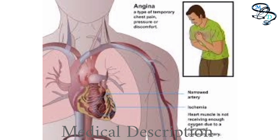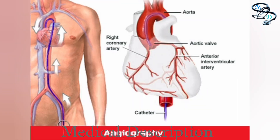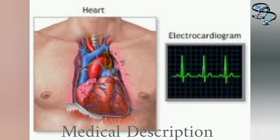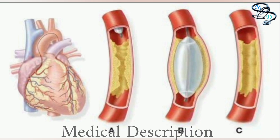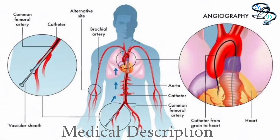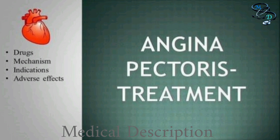Doctors usually ask about the patient's medical history and perform tests to diagnose angina pectoris. Tests typically involved are angiography — a kind of X-ray in which blood vessels and blood flow to the heart can be examined — and an electrocardiogram or ECG, which evaluates heart rhythm, heart rate, and measures the electrical activity of the heart. These tests can identify if any arteries are blocked and whether the heart is functioning appropriately.